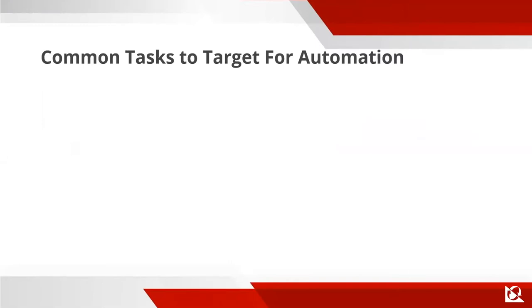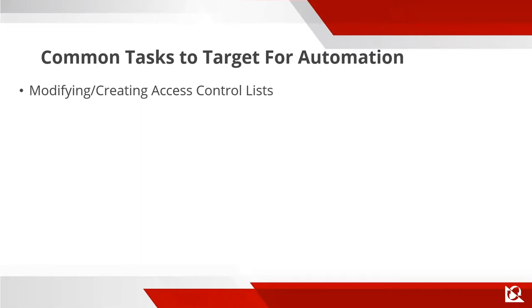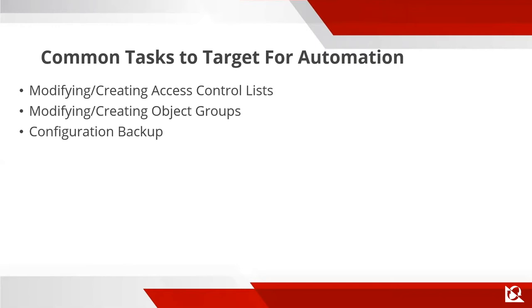Some common tasks for automation, particularly around network security appliances: modifying or creating access control lists is a pretty common ask — new apps, new swim lanes, everybody wants firewall ACLs modified. Modifying or creating object groups is also typical. Backing up your configuration is an easy win before and after changes, instead of buying software. Software updates and password rotation are also good candidates.